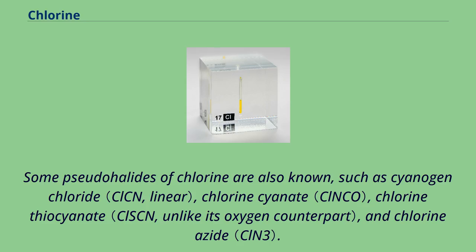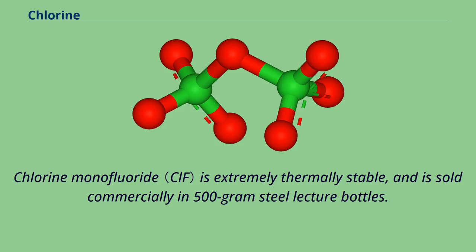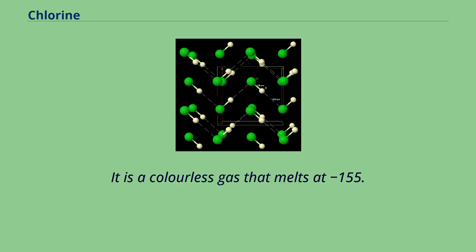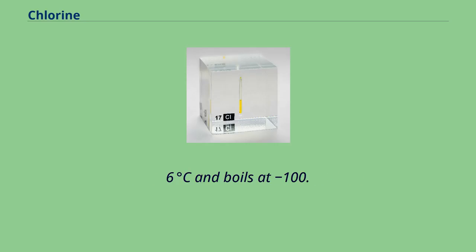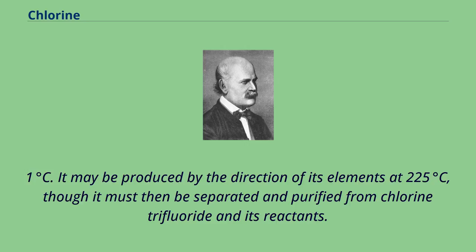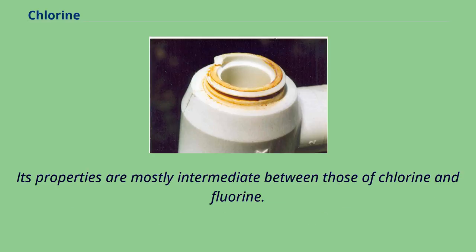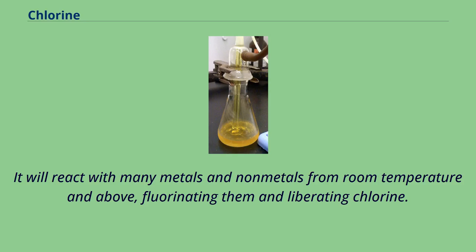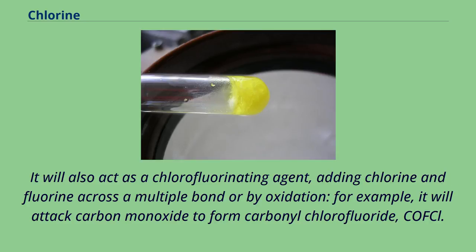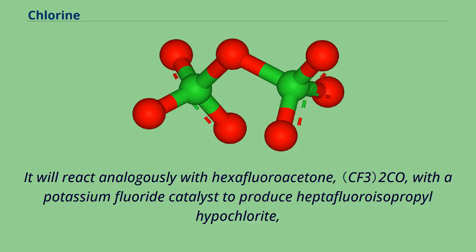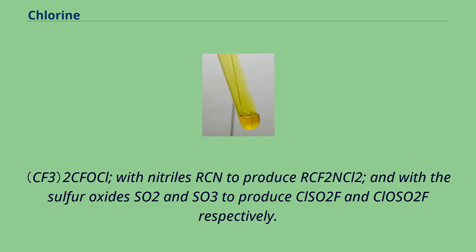Chlorine monofluoride is extremely thermally stable, and is sold commercially in 500g steel lecture bottles. It is a colorless gas that melts at −155.6°C and boils at −100.1°C. It may be produced by the direct reaction of its elements at 225°C, though it must then be separated and purified from chlorine trifluoride and unreacted reactants. Its properties are mostly intermediate between those of chlorine and fluorine. It will react with many metals and non-metals from room temperature and above, fluorinating them and liberating chlorine. It will also act as a chlorofluorinating agent, adding chlorine and fluorine across a multiple bond or by oxidation — for example, attacking carbon monoxide to form carbonyl chlorofluoride, COFCl, reacting with nitriles RCN to produce RCF₂NCl₂, and with the sulfur oxides SO₂ and SO₃ to produce ClOSO₂F and ClOSO₃F respectively.